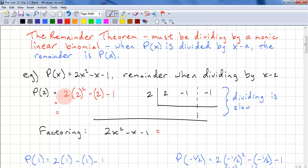So we evaluate this. 2 times 4 is 8, minus 2, minus 1, and we have 5 as our answer. So 5 is the remainder according to the Remainder Theorem.